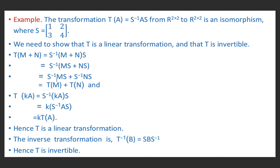S⁻¹MS is nothing but T(M), and S⁻¹NS is T(N). So we have shown that T(M + N) = T(M) + T(N), meaning T preserves addition. For scalar multiplication, T(kA) = S⁻¹(kA)S = k·S⁻¹AS = k·T(A). It means T(kA) = k·T(A), so T preserves scalar multiplication. Hence T is a linear transformation.